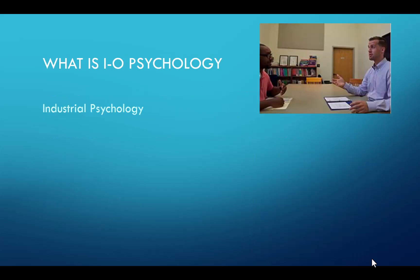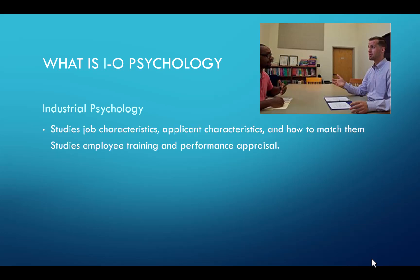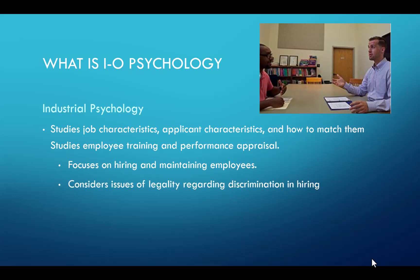Let's separate out the two. Industrial psychology is going to study job characteristics and applicant characteristics — how to match them so that the applicant matches the job and becomes more successful. They study employee training and performance appraisal, with a focus on hiring and maintaining employees. It also considers the legality regarding discrimination in hiring.